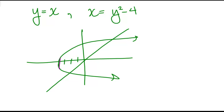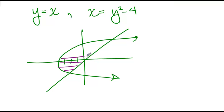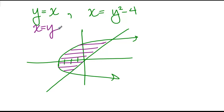And if I just integrate in terms of y and draw those horizontal rectangles, my leftmost function is always y squared minus 4, and my rightmost function is always y — because we're looking at this as x equals y instead of y equals x. So that's a very straightforward example of where you would want to integrate in terms of y instead of x.